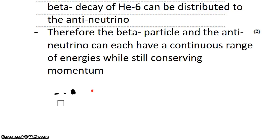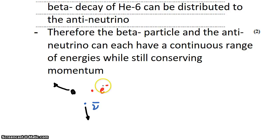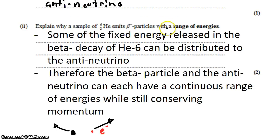But that's not what happens in beta minus decay. In beta minus decay, you also get your anti-neutrino. Because we have this expansion of three different things, we basically have a two-dimensional explosion — the opposite of a two-dimensional collision. We can mix a range of different velocities for the different particles while still conserving momentum, and that allows us to have a range of energies for the beta minus particle.